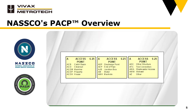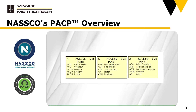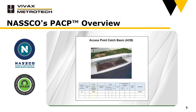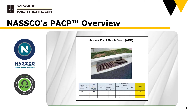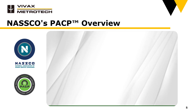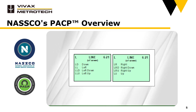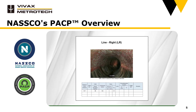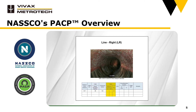The next code group of the construction features family is access points, represented by the letter A. All inspections must begin and end — unless abandoned — at a defined access point. In this case, the access point is a catch basin, so we would code it as ACB, which stands for Access Point Catch Basin. Remarks are used to provide additional information. Moving on to line codes, or the letter L: these codes are used to describe a visible change in the direction of the pipe. In this brick sewer, the line changes direction to the right, so it would be coded as LR, which stands for Line Right, and a value of 25% is added based on the degree change.